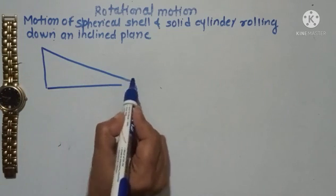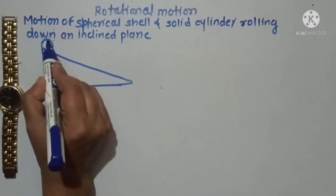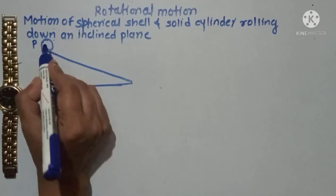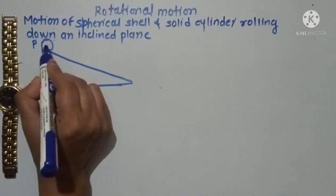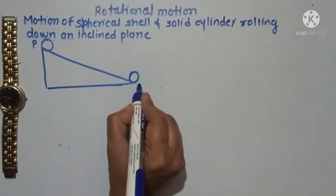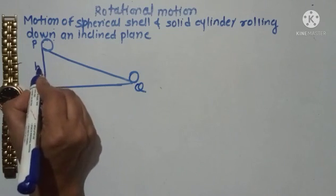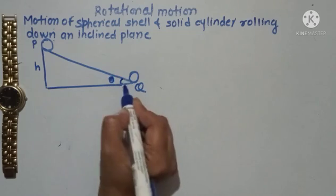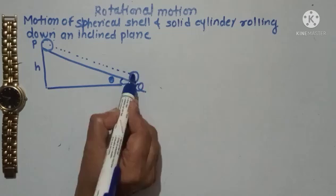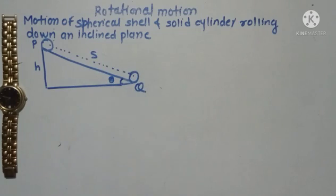Suppose this is an inclined plane and here is the spherical body or the solid cylinder. Let this be position P at time T equal to 0, where the sphere or solid cylinder is at rest. After time T, it will reach point Q. This solid cylinder or sphere is kept at a height H, let theta be the angle, and let S be this distance — the linear displacement of the solid cylinder or sphere.